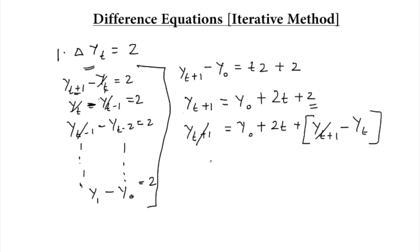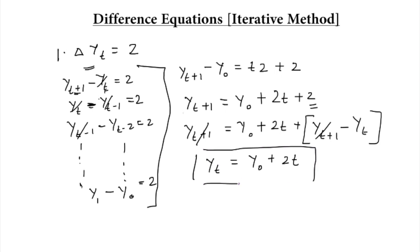This simplifies to yt is equal to y0 plus 2t, which is the required solution for this type of equation. In most equations, the initial values are given. So let's take an example where y0 equals 10. The complete solution will be: yt is equal to 10 plus 2t.